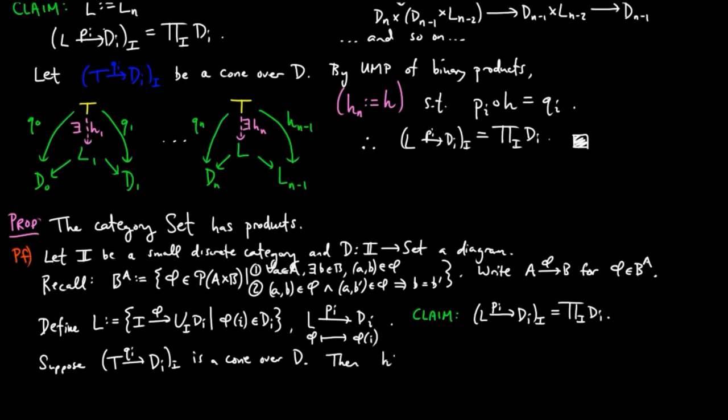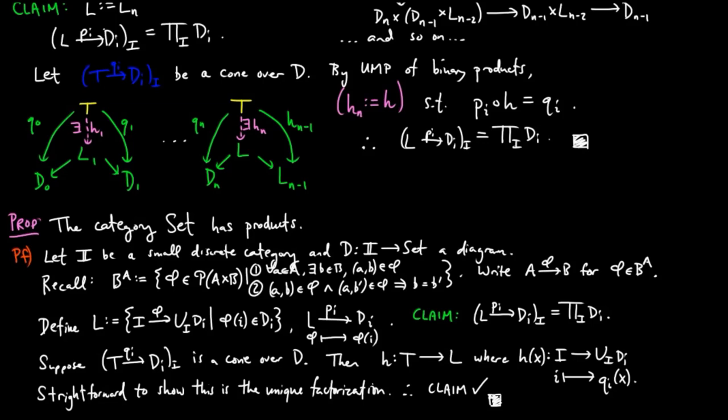Then the set map H from t to L which assigns an element x in t to the map H of x which takes i to q sub i on x is the unique factorization via the cone on L, which we leave you to verify.